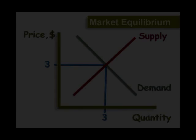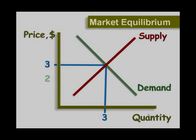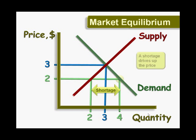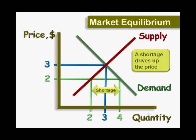If the current market price is below equilibrium, consumers will demand more units than what firms are willing to offer. This means a shortage exists. Consumers can't find everything they want. This leads to a bidding process which drives up the price.